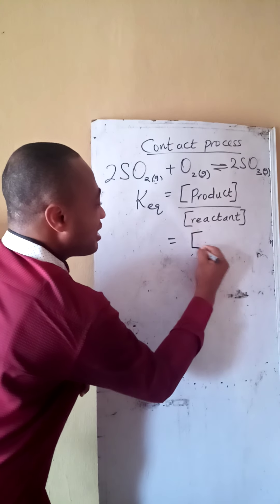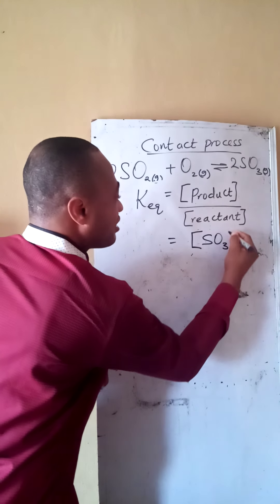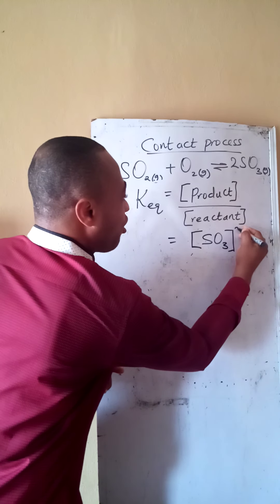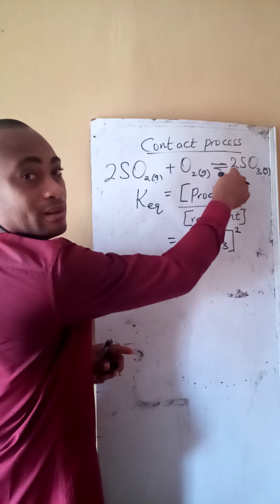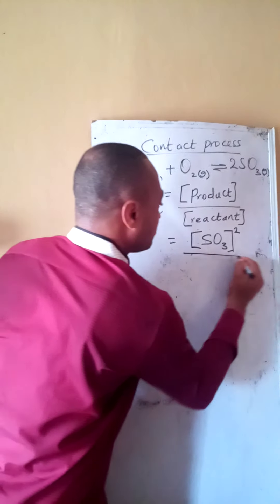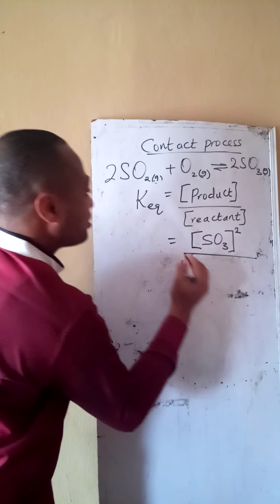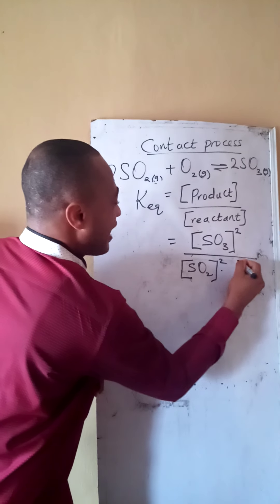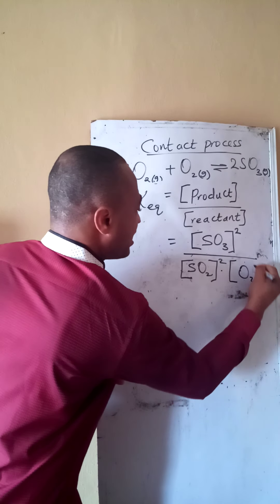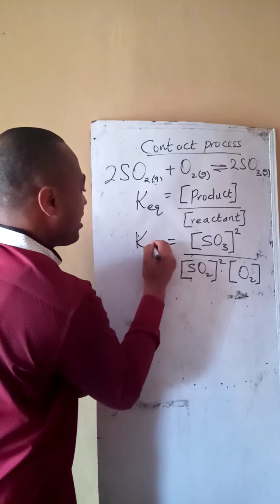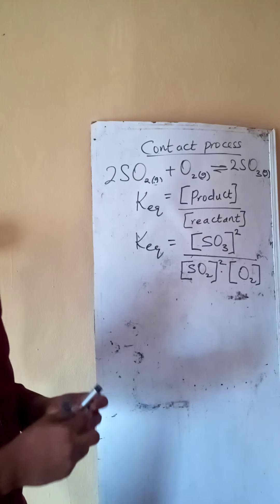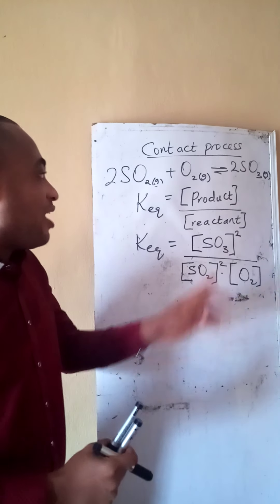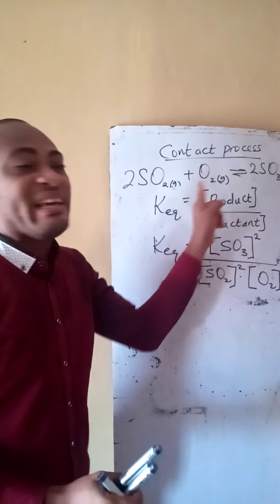Here we have just one product and that is my sulfur trioxide. So it is concentration raised to power the coefficient, all divided by the molar concentration of SO2 raised to power 2, times the concentration of oxygen gas. This is my KEQ. I am doing this because they are all in gaseous states.